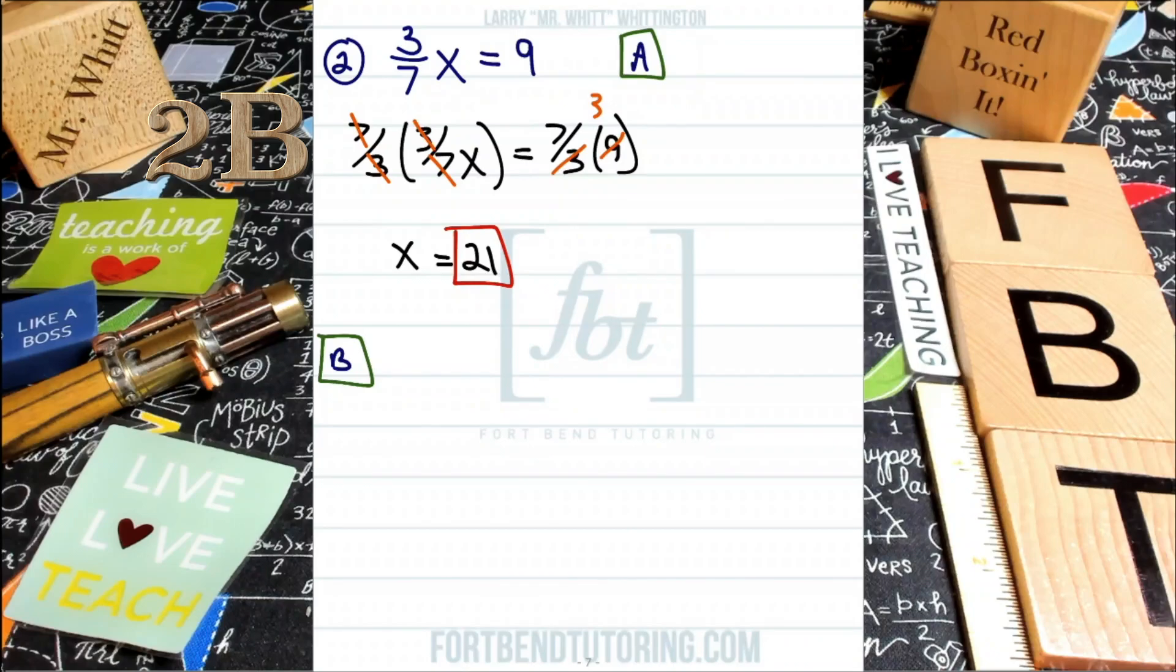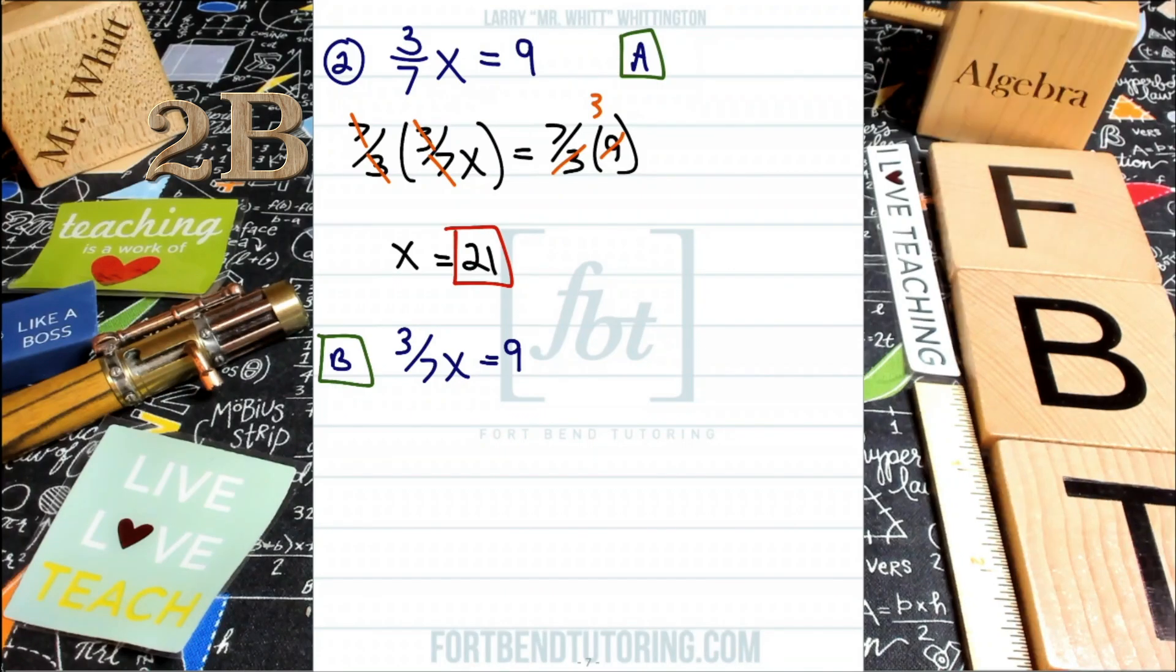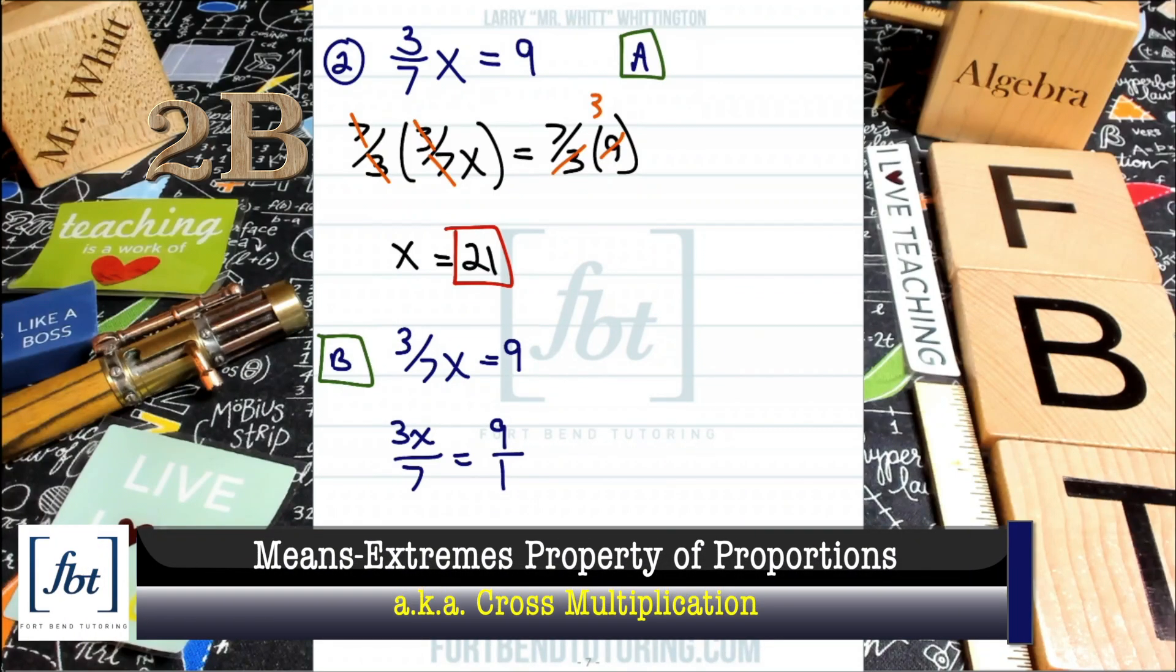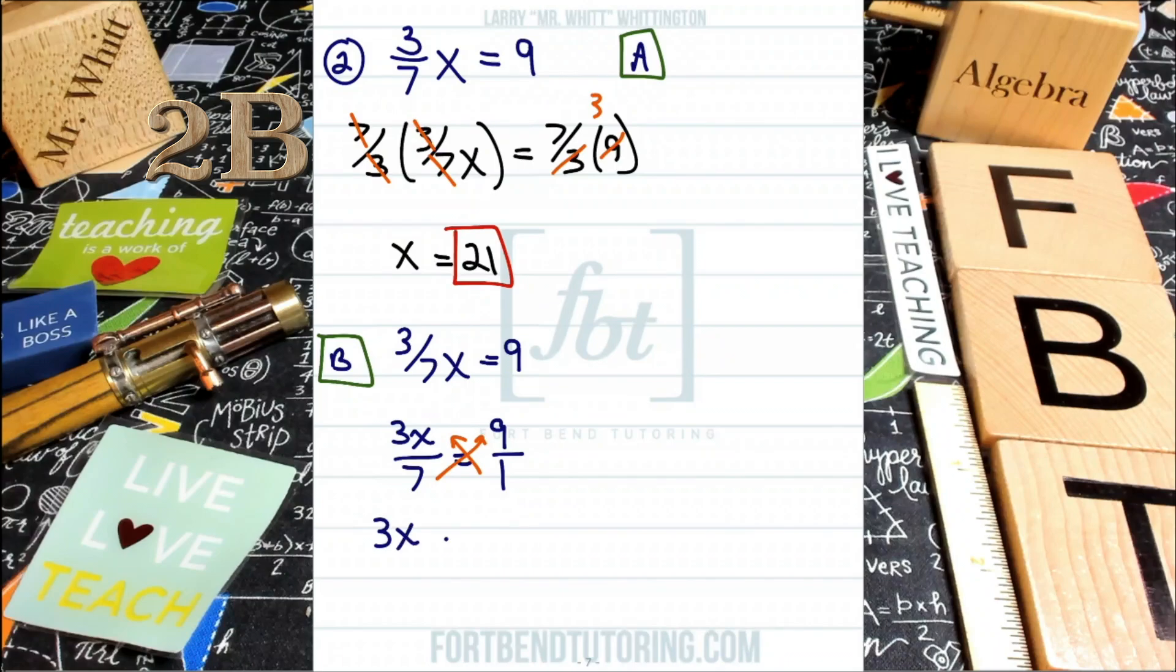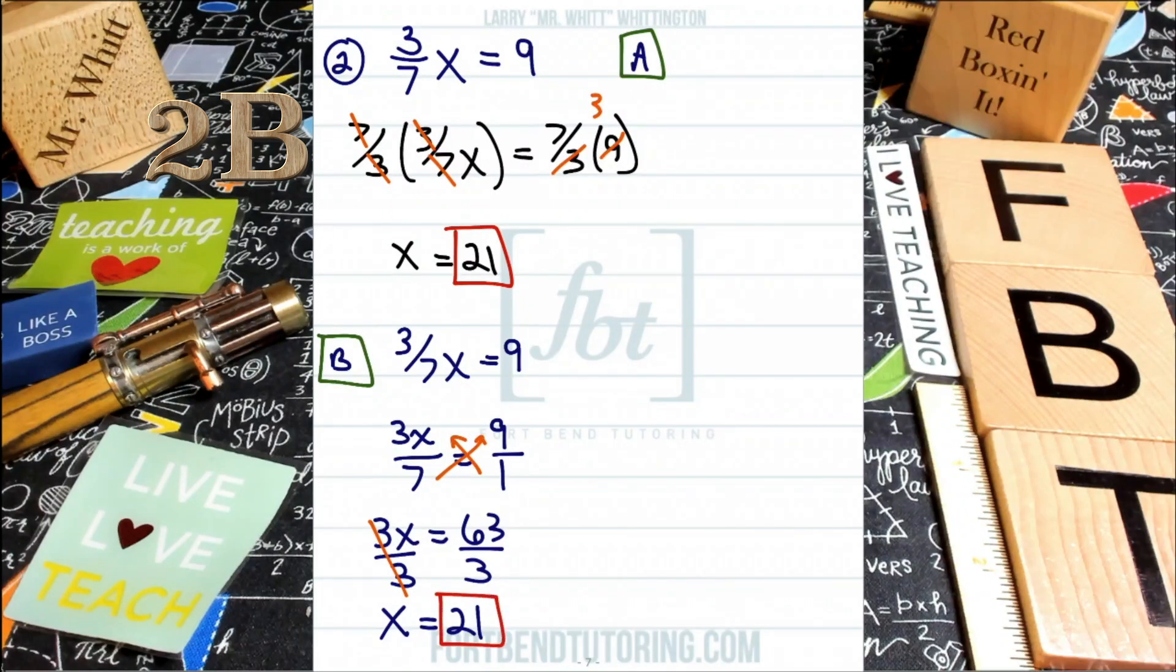Now let's look at method B. We had once again the 3/7 x equals 9, and in method B we converted everything into a proportion. So we would want to rewrite this. Remember to bring that variable up, and you'll have 3x over 7 equals 9 over 1. We then want to use the extremes means method, aka we want to cross multiply. So by cross multiplying here, you'll have 3x equals 63. From there, you'll be dividing both sides by 3 and then simplifying, which gives you x equals 21. Red box it. Here you have it people.